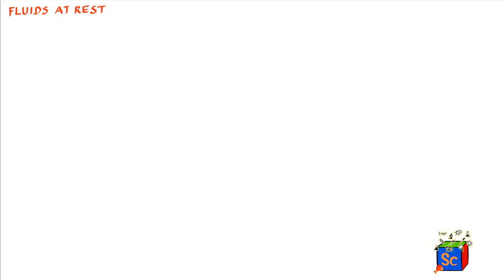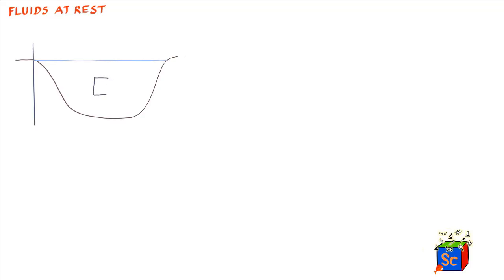Welcome back to the second lesson on fluids. In this lesson we learn what the pressure is at various points within a body of liquid or fluid which is static — meaning stationary and not moving. To understand this, consider a situation at sea level. Let's represent the sea level in this diagram and consider a body of fluid in the shape of a cylinder inside the sea.